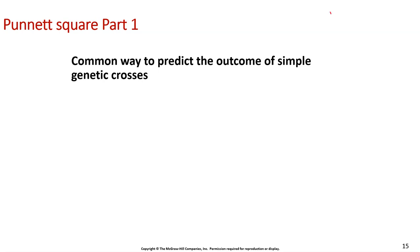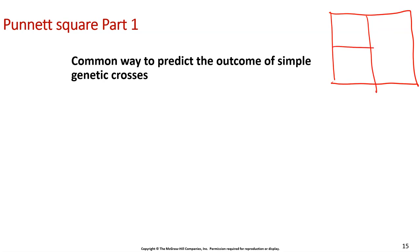Now let's talk about the Punnett square. It looks like a simple window. We put alleles across the top and down the side, and then bring them together to form what our offspring can look like.